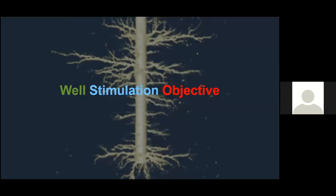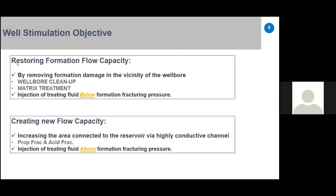Well stimulation has two objectives. The first is to restore formation flow capacity by removing formation damage near the wellbore area. This includes wellbore cleanup and matrix acidizing, with treating fluid injected below the formation fracturing pressure. The second objective is to create new flow capacity by increasing the area connected to the reservoir via a highly conductive flow channel — called propped frac or acid frac — injecting above the formation fracturing pressure.